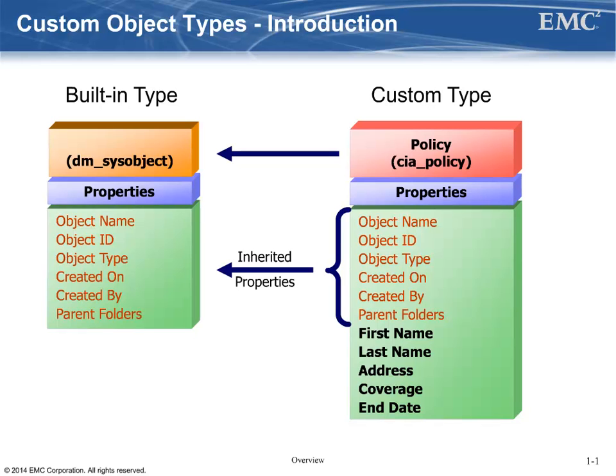In this example, we have extended the base system object type, dmsysobject, and created a new custom object type called policy. This object type could be used to represent a customer's insurance policy within the repository, and thus has several additional properties that are relevant to policies, such as the insurance coverage. The custom type automatically inherits all the properties of the built-in type. Whenever you create a custom type, you specify the parent for that custom type, and the custom type inherits the properties defined in the type definition of the parent type. Don't forget that there is a distinction between object types and object instances. Object types are definitions for which properties that instances of a particular object type may contain. Object instances are actual instantiations of an object type — you can have many instances of a single object type definition.